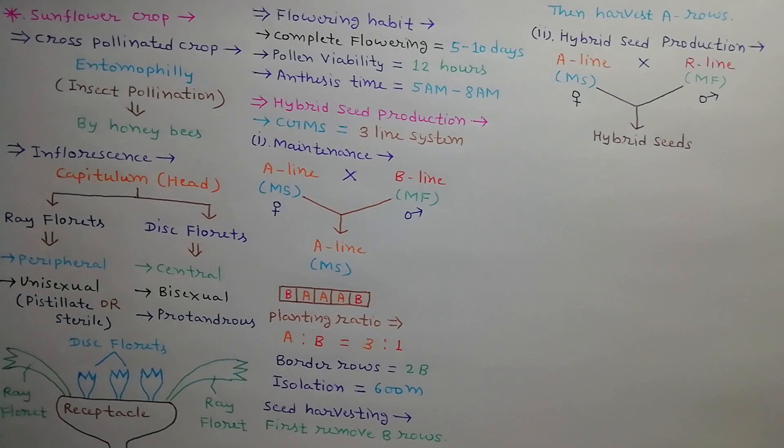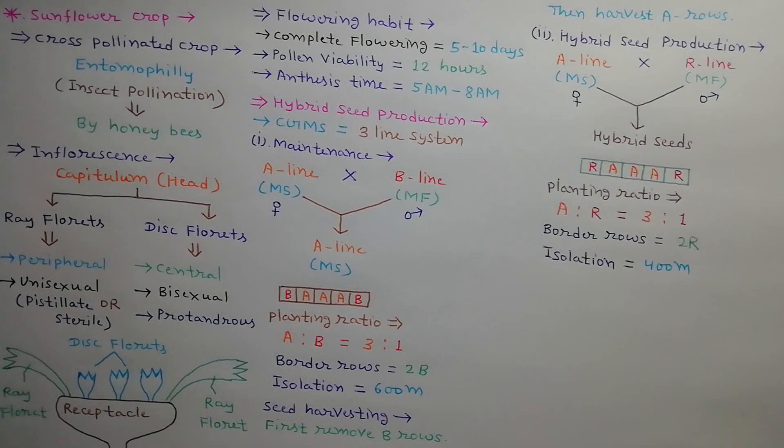As described in lecture number 2, male sterile line A is crossed with male fertile line R for hybrid seed production. In the hybrid seed field, ratio of A and R lines should be 3:1 with 2 border rows of male parents on the sides of seed production plot, and isolation distance should be 400 meters from other fields.